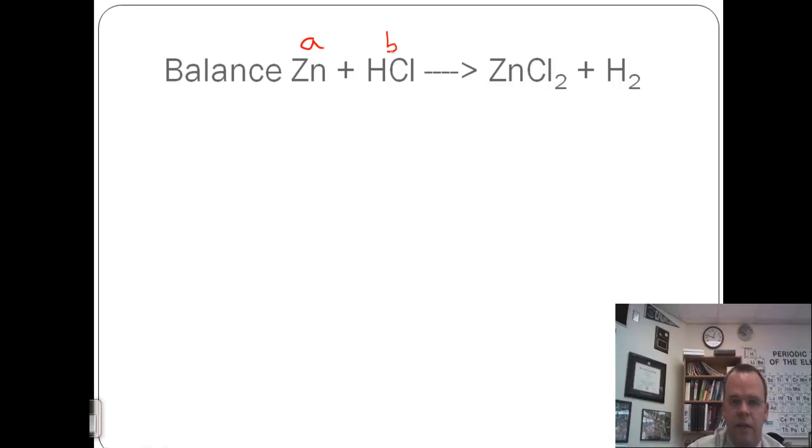Zinc will be A, HCl will be B, ZnCl2 will be C, H2 will be D. So for zinc, we're going to get A equals C. For hydrogen, we're going to get B equals 2D. For chlorine, we're going to get B equals 2C.